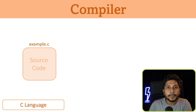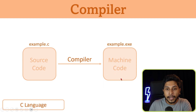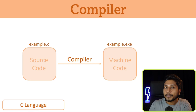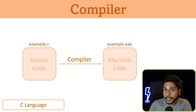So we have a compiler. We have a machine code here, in binary format. We have a separate file — example.exe — an executable file. We have a runnable executable file.